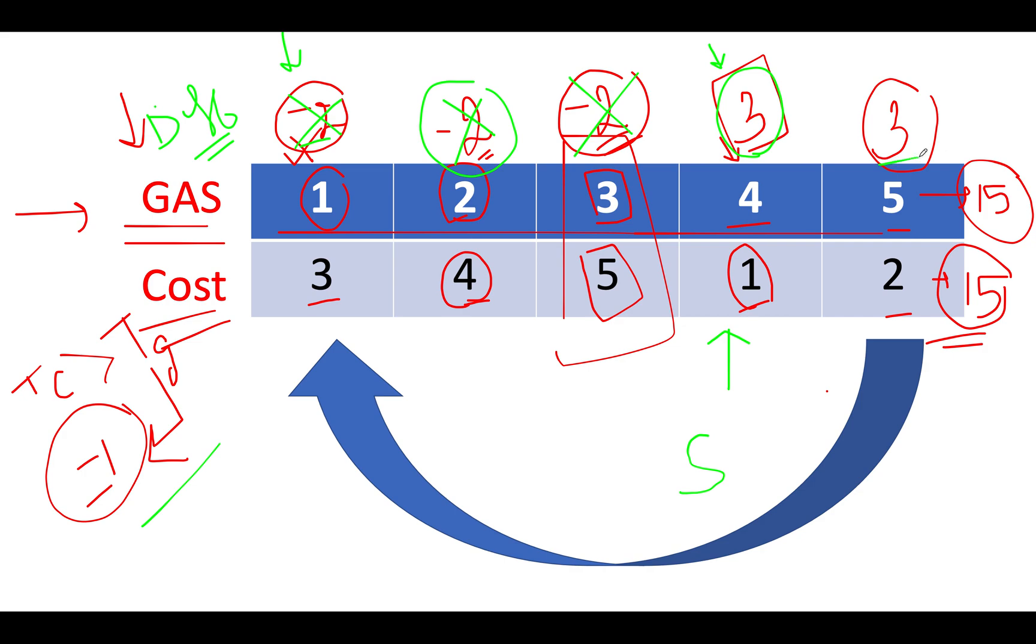There could be a case where going further, we have a higher value when we make the starting journey. For example, it could have been the case where the difference would have been six. However, would we have updated the starting pointer to six instead of three? No, because cumulatively you start making a cumulative sum till the time it remains positive in nature. Three plus six gives us nine. That means we will have more power or more consumable petrol or gas with us to complete the entire journey. That's why as soon as you see a positive value, then only you make it as your starting monitor.